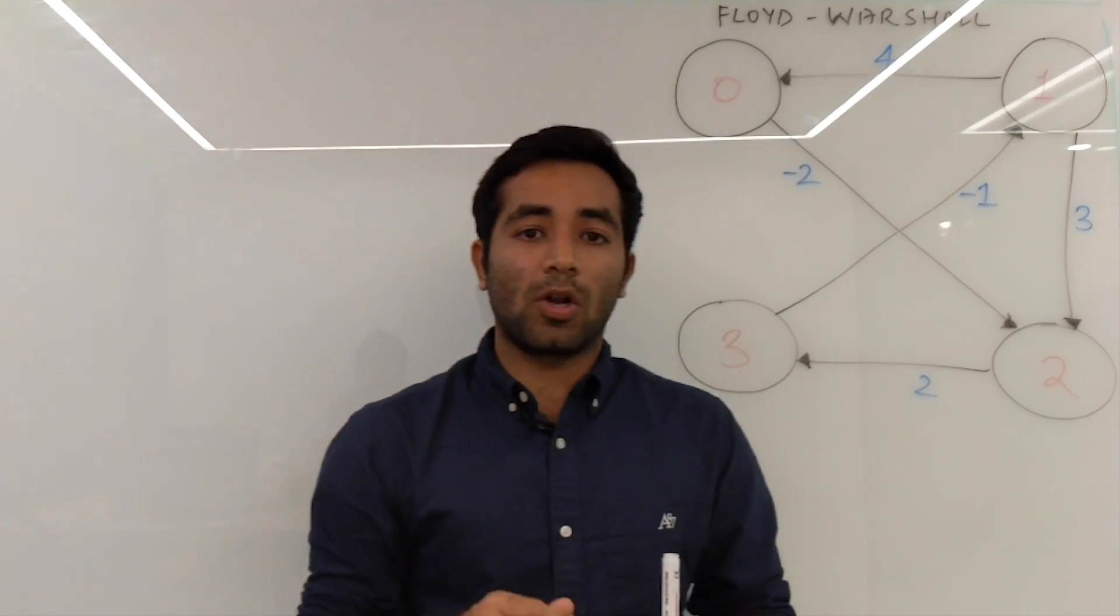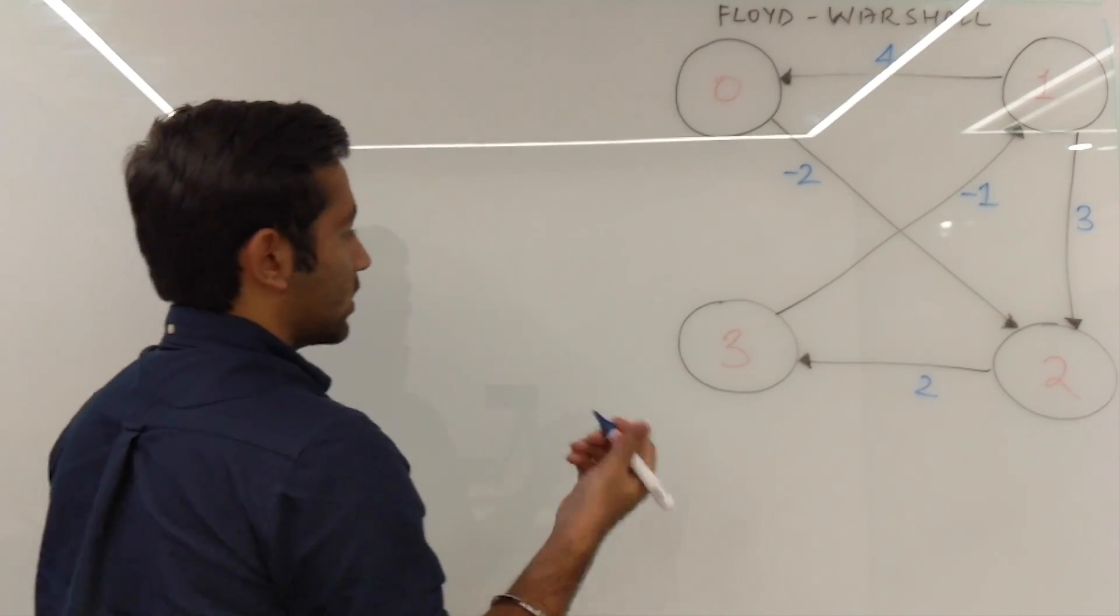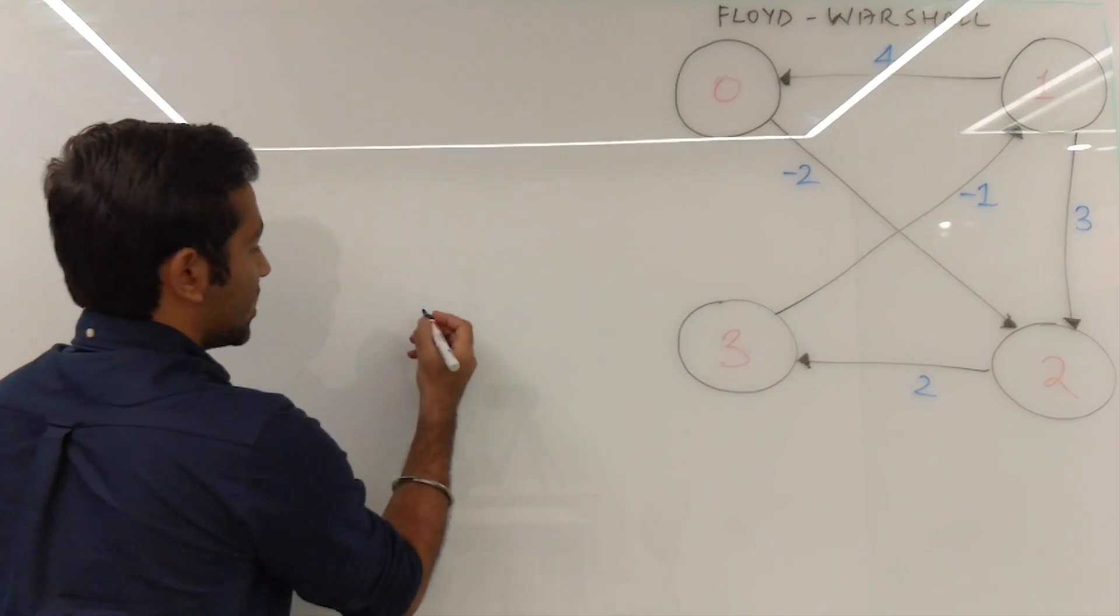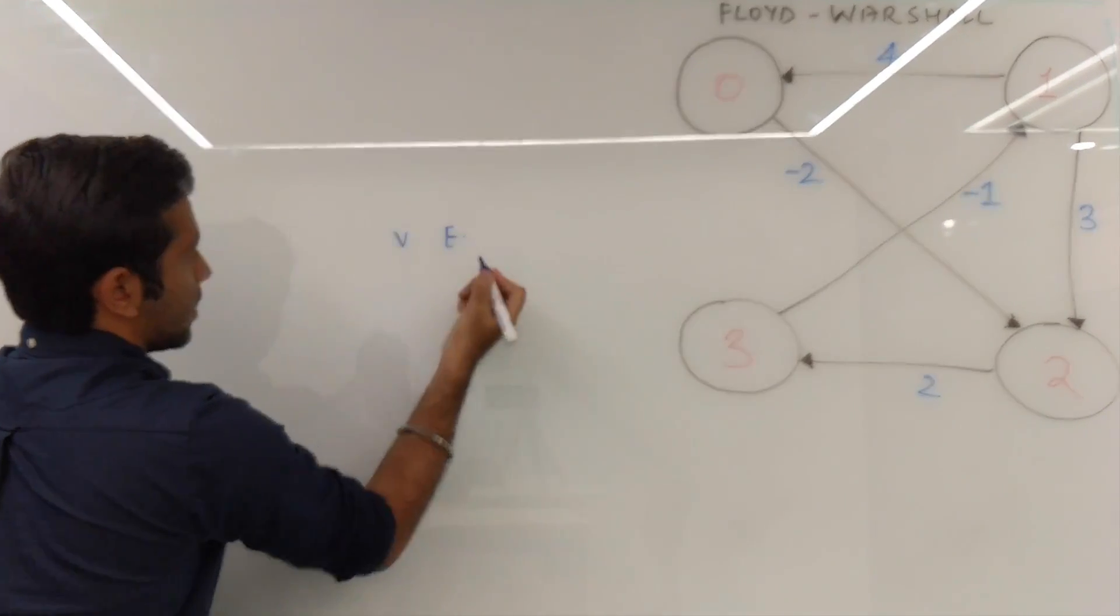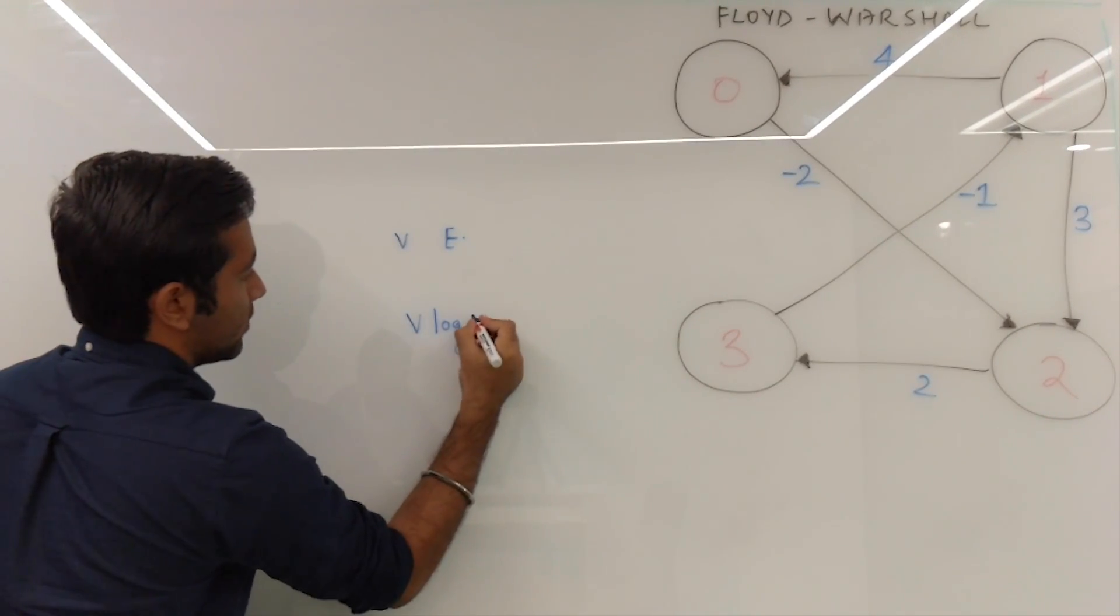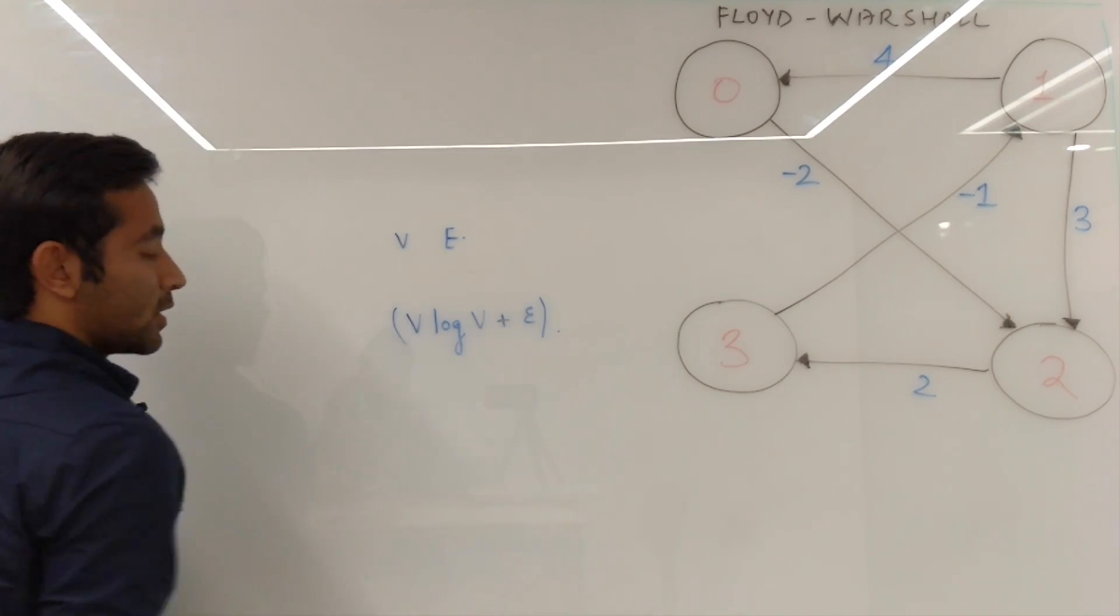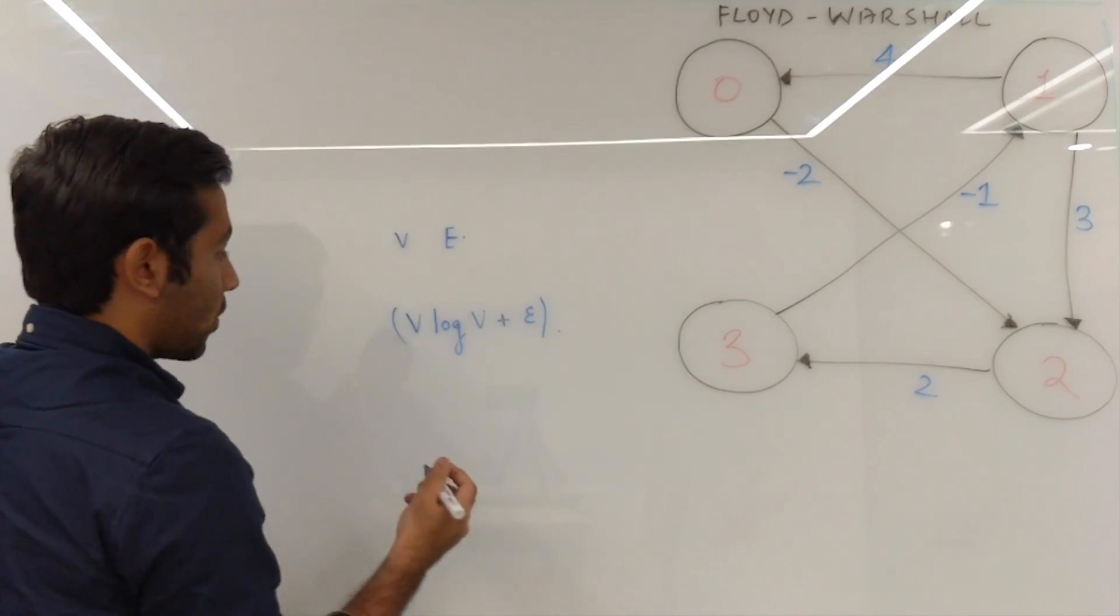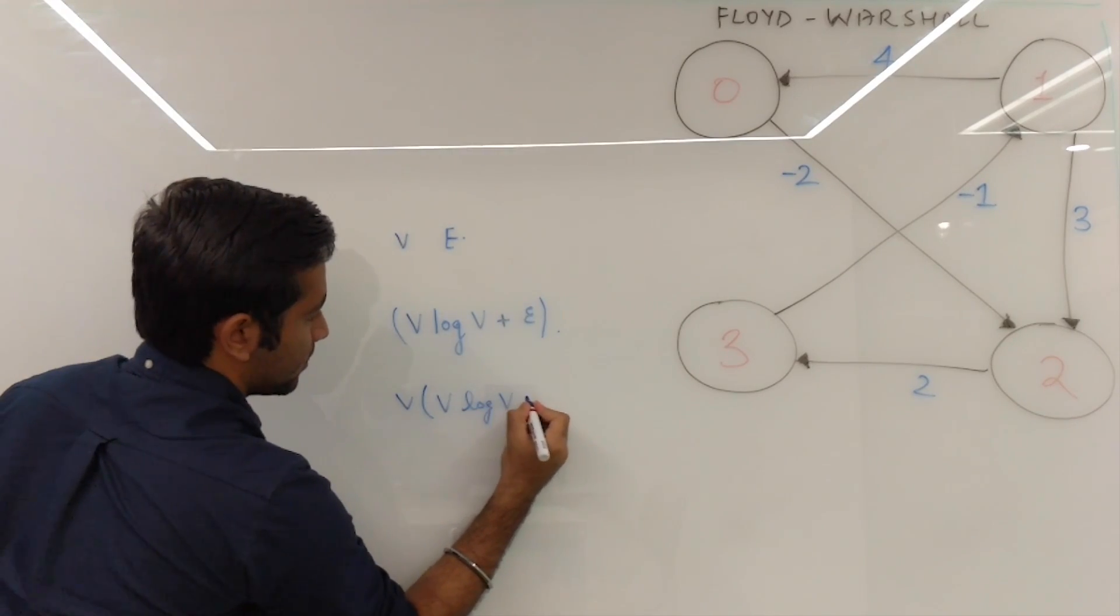So let's see how can we find all shortest paths possible between any two vertices by using Dijkstra. So if you want to solve this particular problem using Dijkstra, what you can do is keep on changing the source. So if we have V vertices and E edges, Dijkstra from a particular source will take V log V plus E time to run. So we can do similar thing for all the vertices.